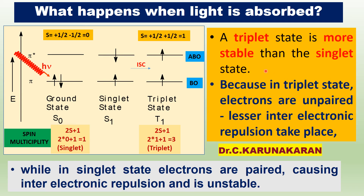In the Jablonski diagram, the triplet state is more stable. The excited triplet state T1 is more stable than the singlet excited state S1, because in the singlet state the electrons are paired, causing inter-electronic repulsion, making it unstable.